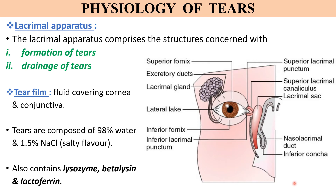Let us first see the physiology of tears. The lacrimal apparatus includes structures concerned with formation of tears, like the main and accessory lacrimal glands, and structures that drain the tears, like the puncta, canaliculi, lacrimal sac, and nasolacrimal duct. The tear film refers to the fluid layer that covers the cornea and the conjunctiva. Tears are made up of 98 percent water and 1.5 percent sodium chloride, which gives tears their salty flavor.